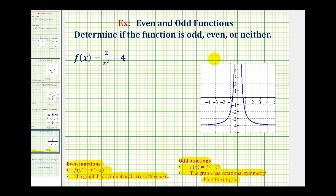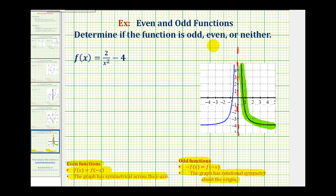So when asked to determine if a function is odd, even, or neither, I always like to start by looking at the graph of the function and then verifying it algebraically. Here's the graph of our given function. Right away we should recognize that if we were to fold this graph across the y-axis, the two halves would match up perfectly — the green half would match up perfectly with the blue half. Therefore this graph has symmetry across the y-axis, and therefore this is an even function.